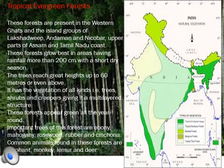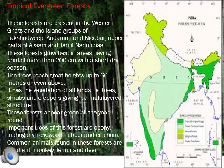The first forest type is tropical evergreen forest, also called rain forest. On the map, it is visible near the Western Ghats, the Assam side, Lakshadweep, and the Andaman and Nicobar Islands. This forest requires heavy rainfall and is found near the Western Ghats, the island groups of Andaman and Nicobar, Lakshadweep, the upper part of Tamil Nadu, and Assam.